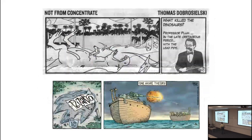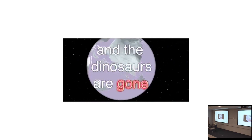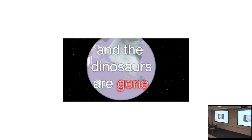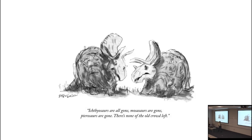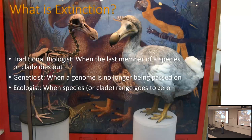This was actually from the Diamondback — Professor Club in the Cretaceous with a lead pipe — and the enthusiasm of a dinosaur astronomy club, which was short-lived. This is a phenomenon of great interest to a lot of people. It's not just dinosaurs: here are triceratops lamenting that ichthyosaurs, mosasaurs, and pterosaurs are all gone — none of the old crowd left. And of course the great raptor rapture at the end of the Cretaceous.